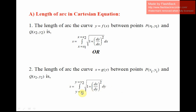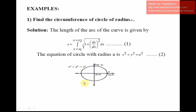We try to find the circumference of a circle of radius a. The length of arc of the curve is given by s = integral of √(1 + (dy/dx)²) dx, with limit x₁ to x₂ — we write this as equation number 1. We draw a diagram: this is a circle with radius a and center (0,0).